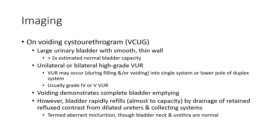Imaging: Voiding cystourethrogram (VCUG). Large urinary bladder with smooth walls, two times the estimated normal bladder capacity. Unilateral or bilateral high-grade VUR may occur during filling and voiding into a single system, lower pole, or duplex system — usually grade 4 and 5.